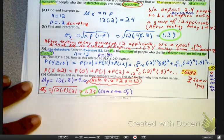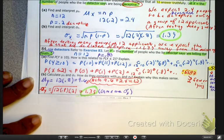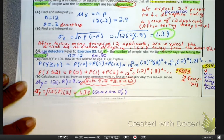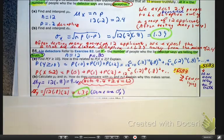Okay, so that is it for finding the mean and the standard deviation of this specific type of discrete random variable given a binomial distribution. So, peace out. Have a good one, guys. Bye-bye.